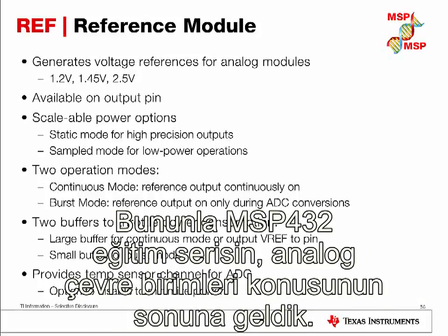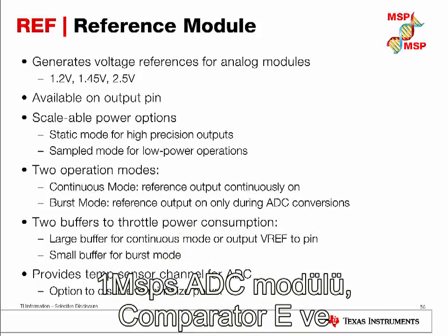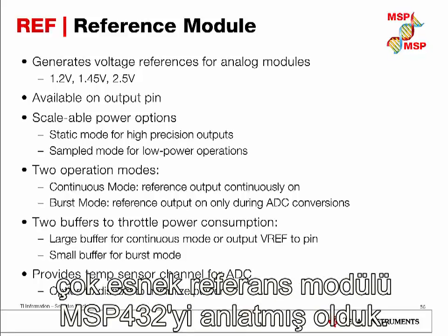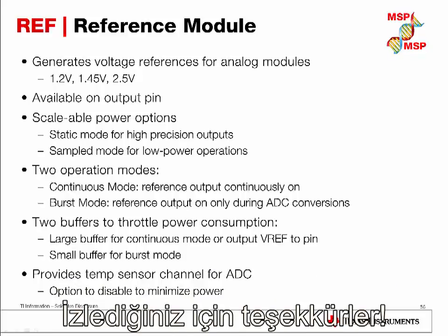With this, we have concluded the Analog Peripherals chapter of the MSP432 MCU training. We have covered the 1 mega sample per second 14-bit ADC module, the Comparator-E, and the highly flexible reference module available on the MSP432. Thank you for watching.